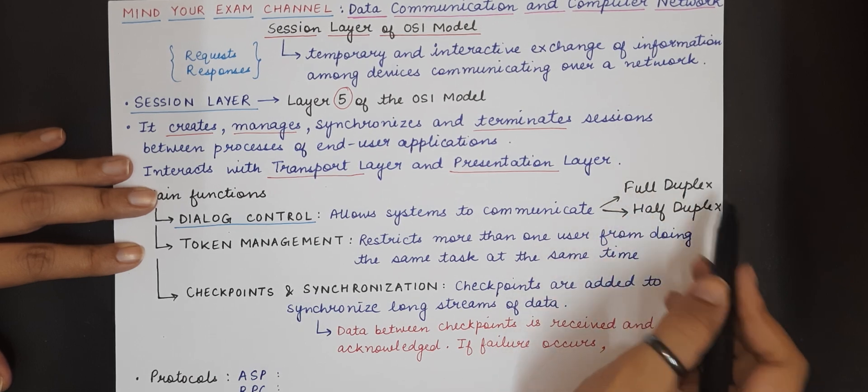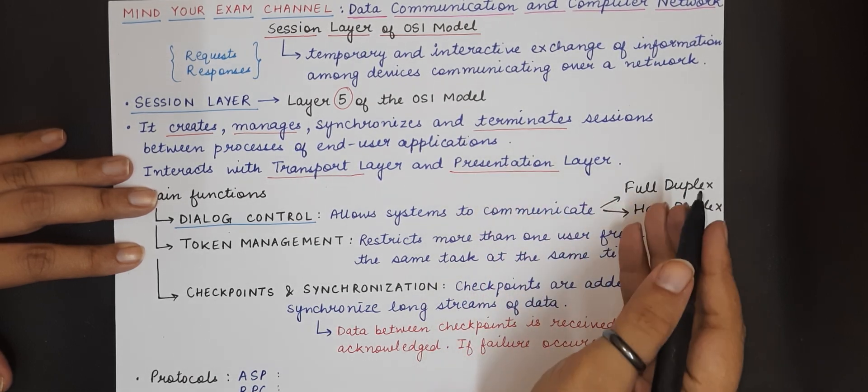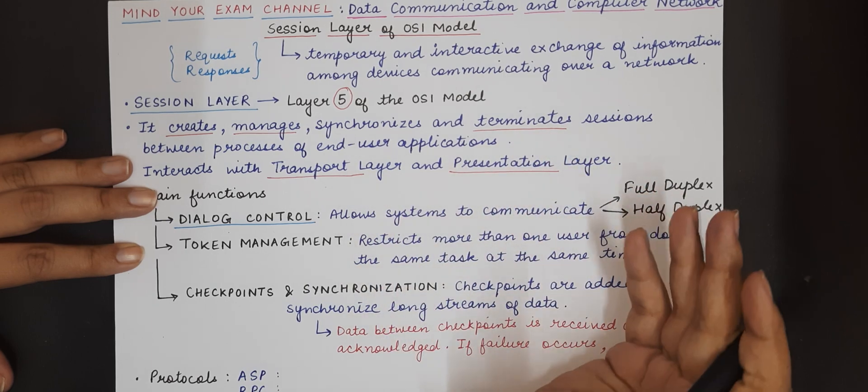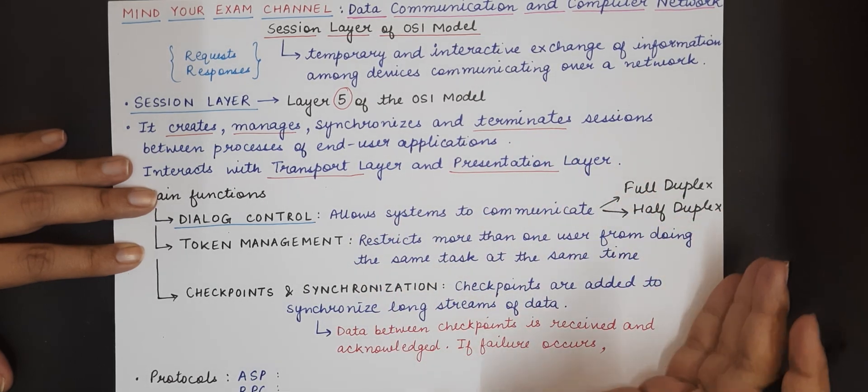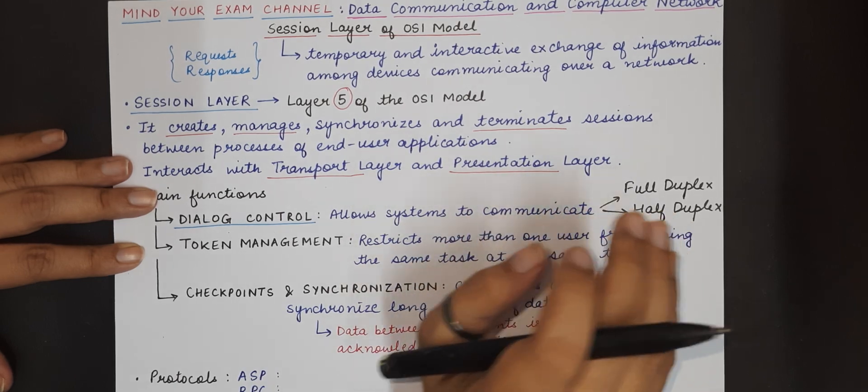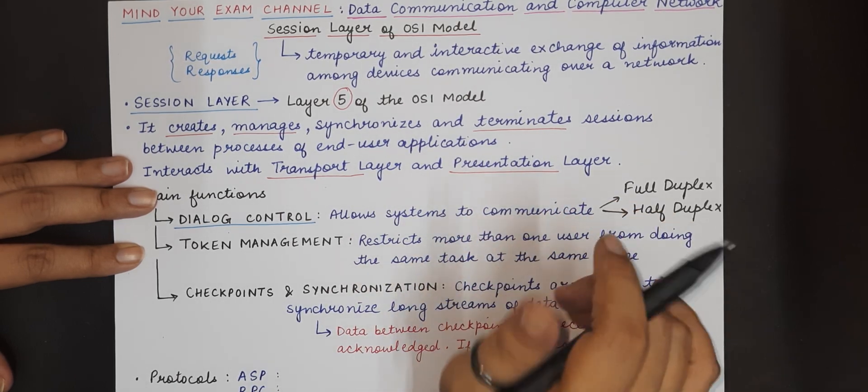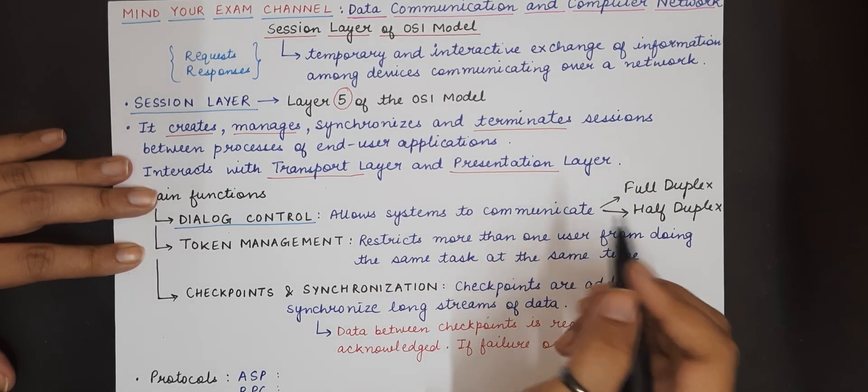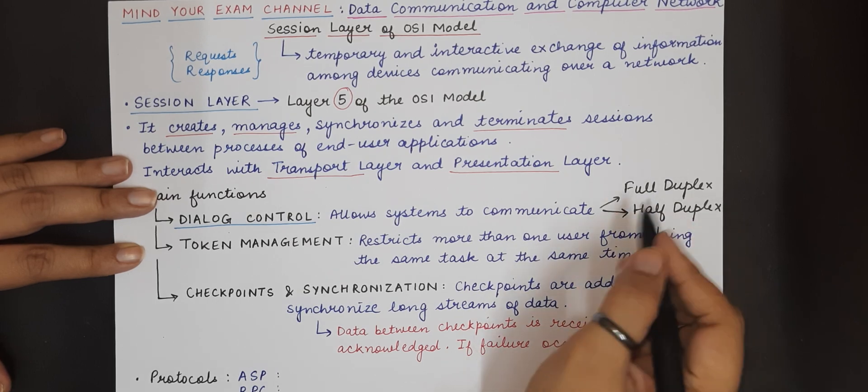But in half duplex, although both the machines can either become a sender or receiver at different given points, they cannot become the sender and receiver at the same time. So simultaneously no exchange can happen in both directions.